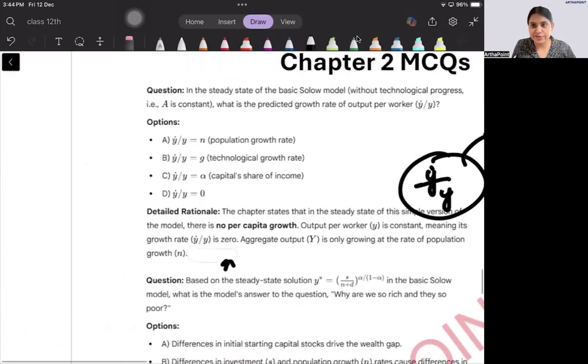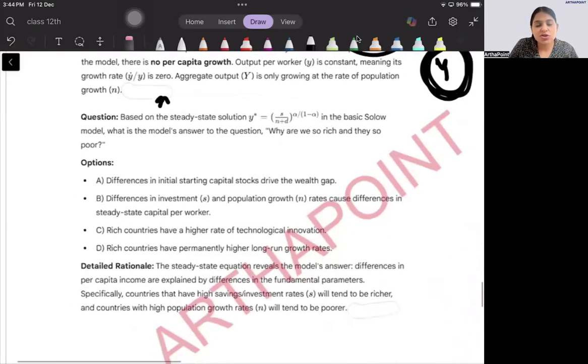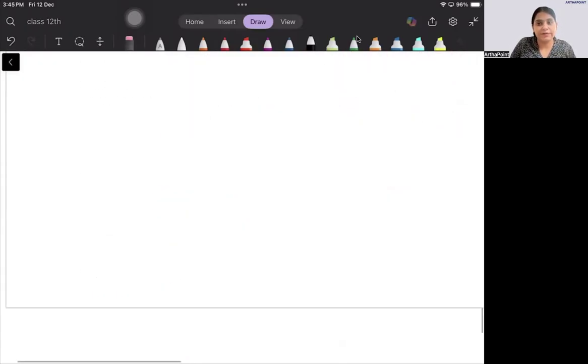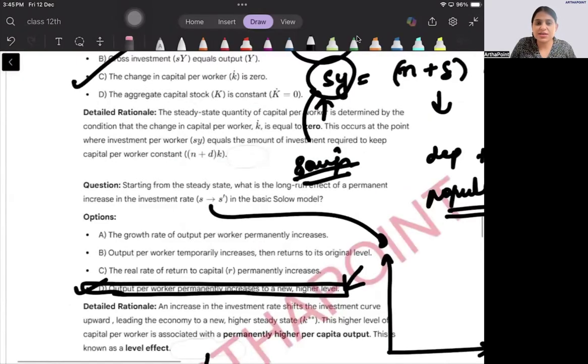Based on the steady state Y star in the basic Solow model, what is the model's answer to the question why we are so rich and the other people are poor? Some people are rich and other people are poor because of the differences in the parameters. Savings rate is different, population growth rate is different, depreciation rate is different. Because these parameters differ, difference in investment and population growth rate causes different steady state levels. Is it clear?